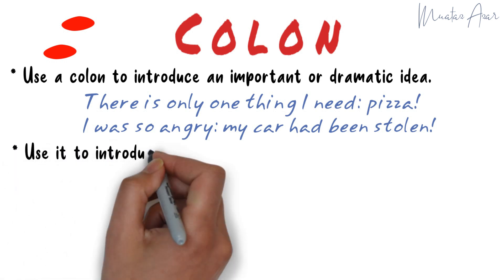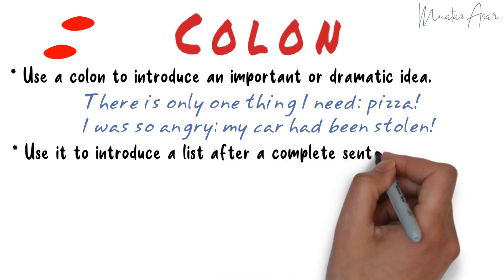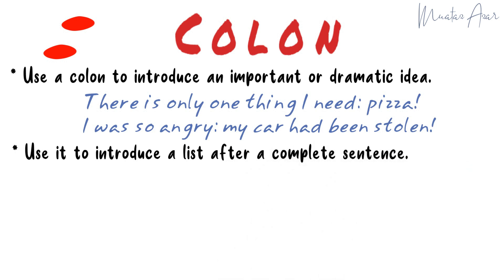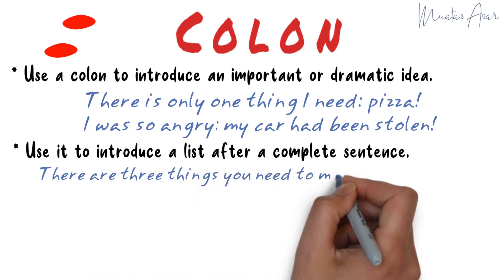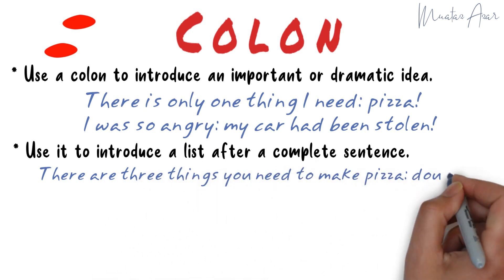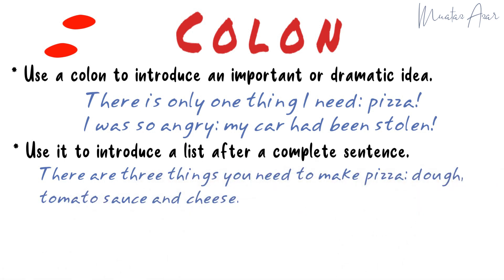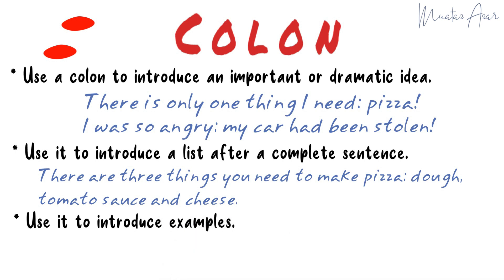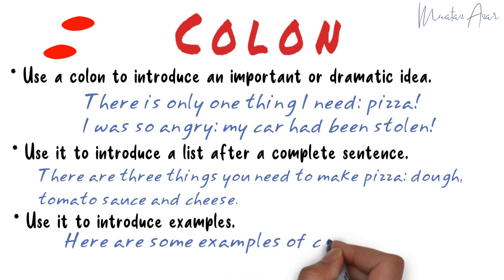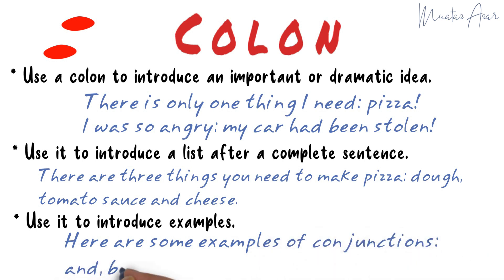Use a comma to introduce a list after a complete sentence. For example: "There are three things you need to make pizza: dough, tomato sauce, and cheese." Also, use a comma to introduce examples. Here are some examples of conjunctions: and, but, or, because.